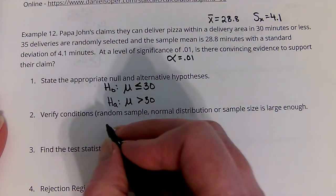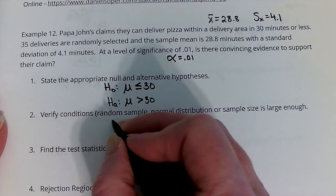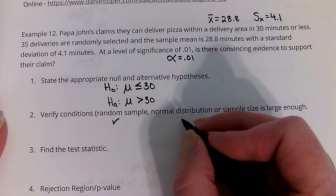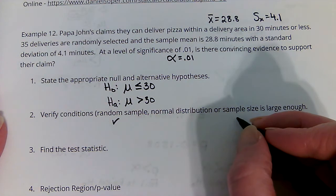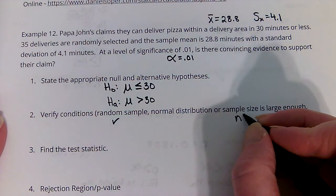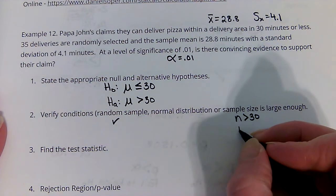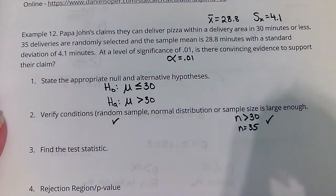So we need to verify our conditions. Was it a random sample? Yes. Did they tell us it's normal? No. But is the sample size greater than 30? Well, 35 is greater than 30, so we're good there.